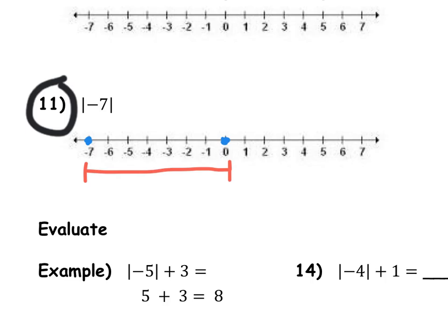Well, if you count negative 6, negative 5, negative 4, negative 3, negative 2, negative 1, 0, that is 7 total units away from 0. So even though the number is negative 7, the absolute value is positive 7, because it's 7 away from 0.